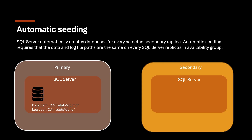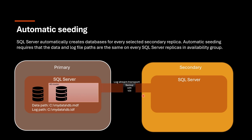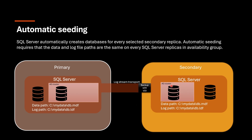Let's start with Automatic Seeding. Automatic seeding automatically creates the database for every selected secondary replica. It requires that the data and log file paths are the same on every SQL Server replica. When you add the database to the AG cluster in primary with this option, SQL Server automatically creates a backup using VDI and moves it to secondary using log stream transport. The same database with the same file path appears in secondary, synchronization starts, and SQL Server synchronizes any incremental data from that point.